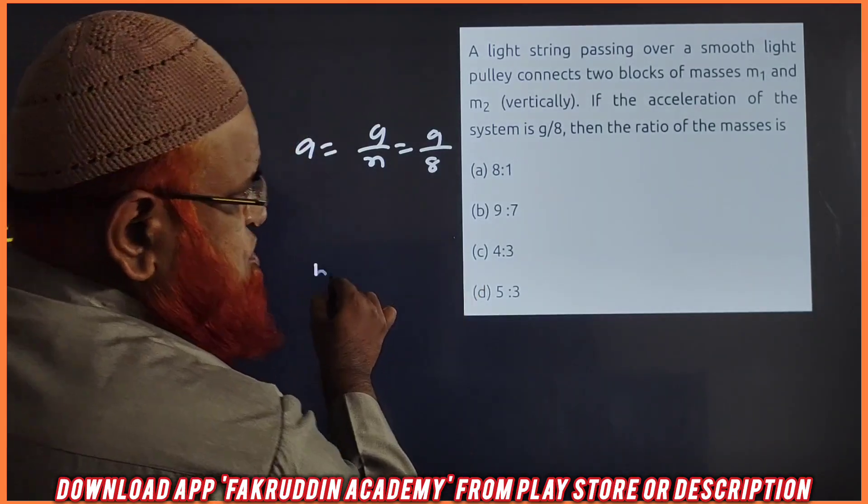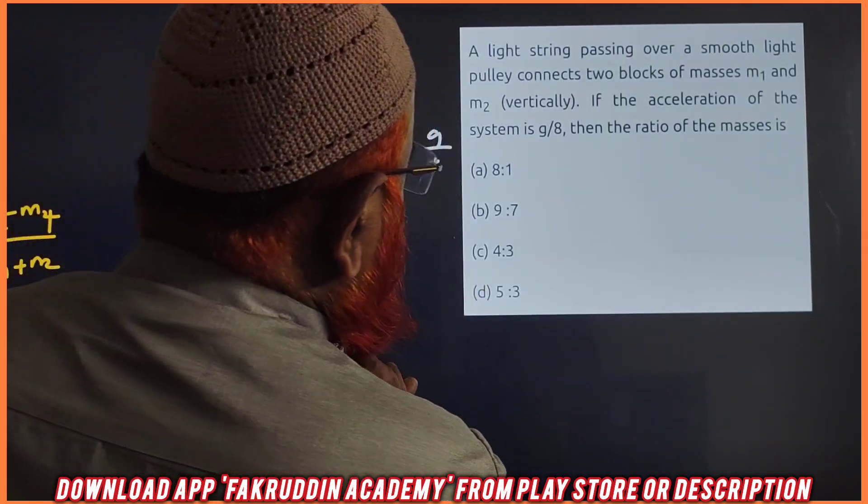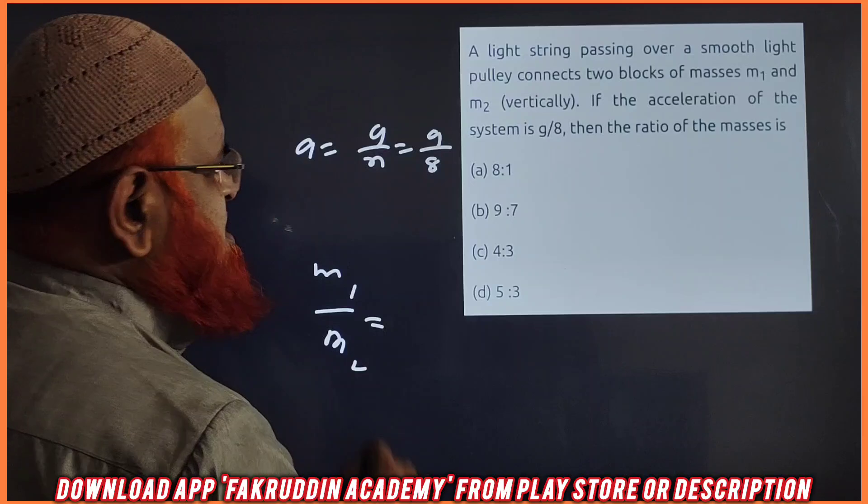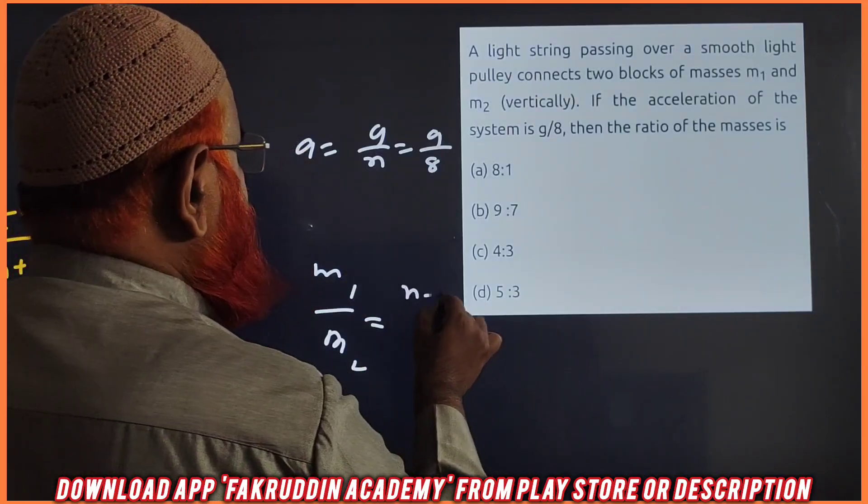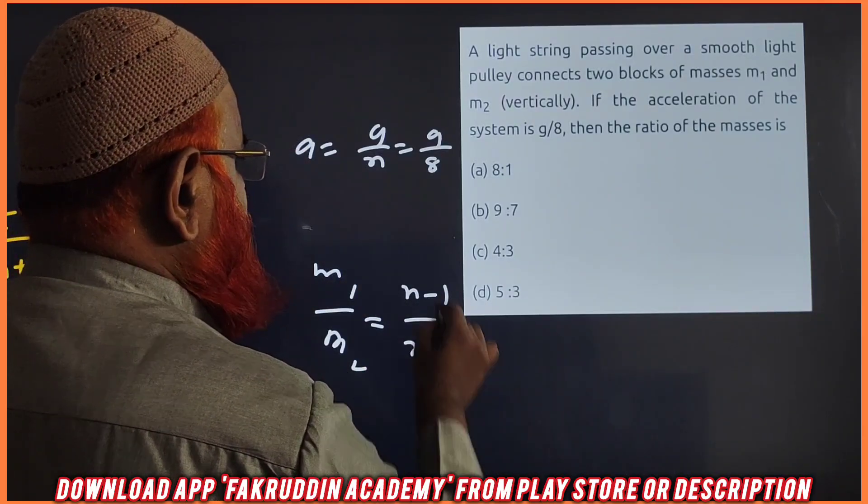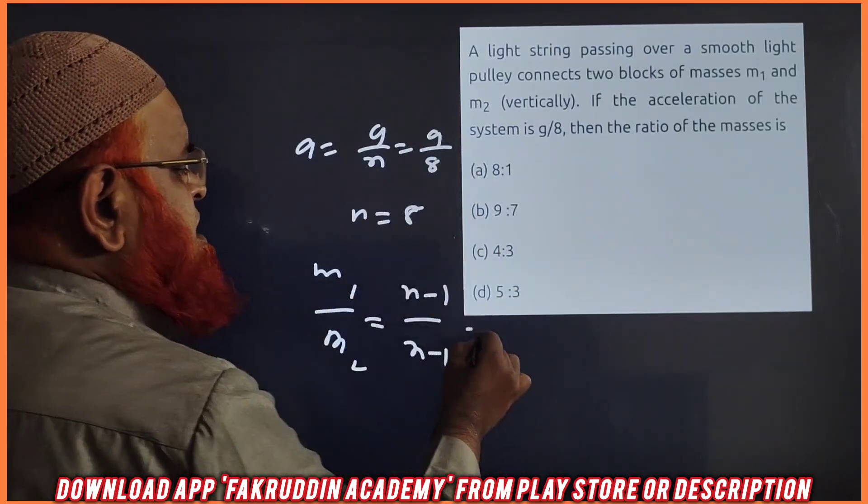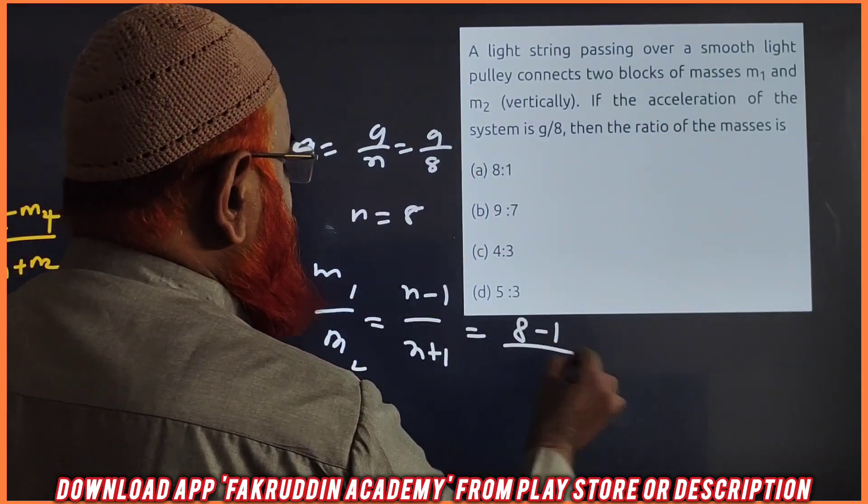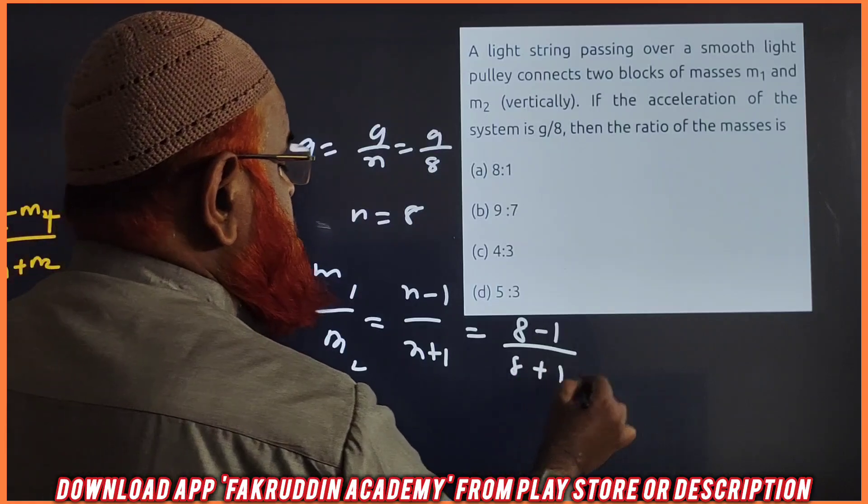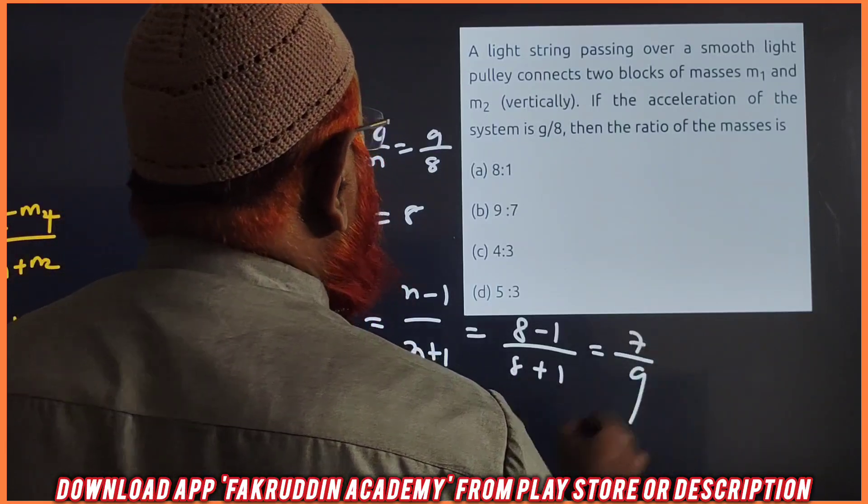So how are you going to find out the ratios of M1 by M2? It is very simple. I just told you that you have to write N minus 1 by N plus 1. So here, G by N is nothing but, in the place of N, it will be 8 here. So it is nothing but 8 minus 1 by 8 plus 1. It is going to be 7 by 9.